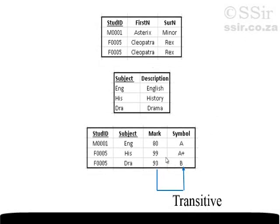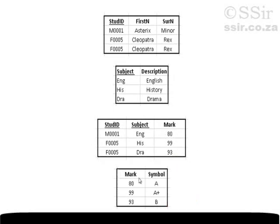The relationship between symbol and mark is a transitive dependency. If I remove them by creating a fourth table in which mark is the primary key and symbol is dependent on it, it looks like this: the original three tables, with symbol removed from the marks table and placed next to mark in a new table, where mark is the primary key and symbol is dependent on it — so mark should be underlined here as well.